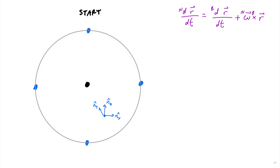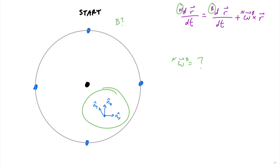Now here's the trippy one — angular velocity is undefined for the geometric point. It has to do with reference frames B and N. N is the reference frame of Earth, which we can always define. But what is B, the reference frame of the book, when the book is a geometric point? It doesn't take up any space. A reference frame is a rigid 3D object — it needs some kind of rigid body to associate with. A geometric point is not a 3D object, so we cannot define a reference frame for it. It doesn't make sense to define three orthogonal unit vectors for a geometric point. Therefore, angular velocity is undefined because we can't define reference frame B.